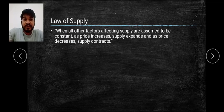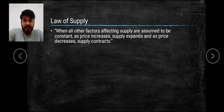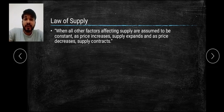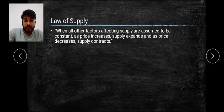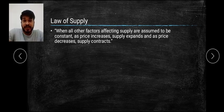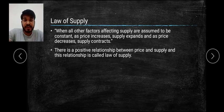The law states that when all other factors affecting supply are assumed to be constant — that is, level of technology, future prices, factor of production, and other factors — if the price of a product increases, the supply of that product will also increase. When the price decreases, the supply also decreases. This shows a positive relation between the supply of a good and the price of the particular good. This relation is called Law of Supply.